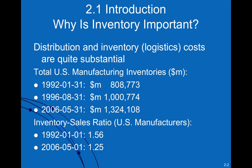Another example is work-in-process inventory. If you produce a final product made up of sub-components, then in the production facility it is possible to have inventory of those sub-components waiting to be assembled, and you call that work-in-process inventory. So there are all kinds of inventory types.